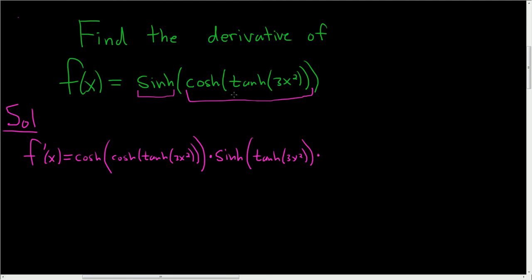The derivative of the hyperbolic tangent is the hyperbolic secant squared of 3x squared, times the derivative of the inside once again. And the derivative of 3x squared is 6x, times 6x.